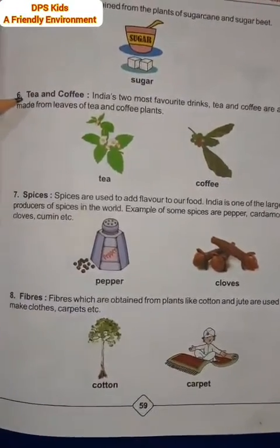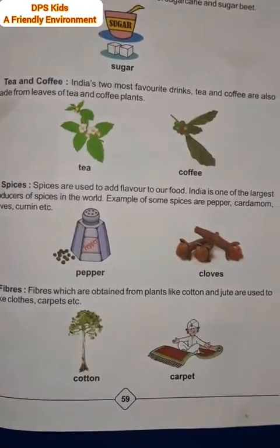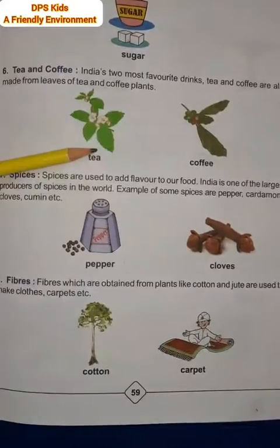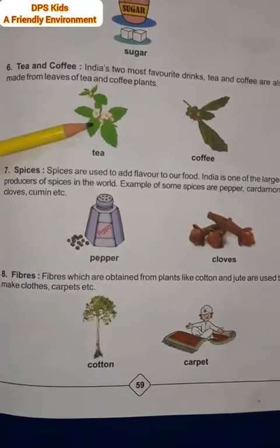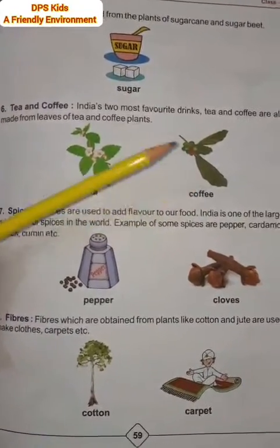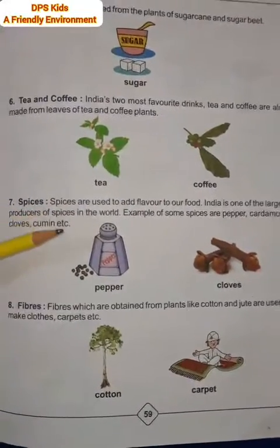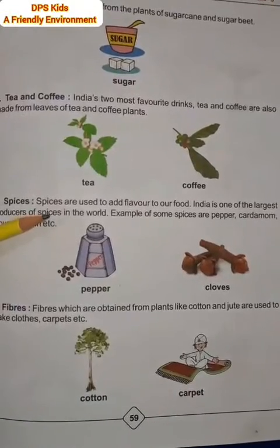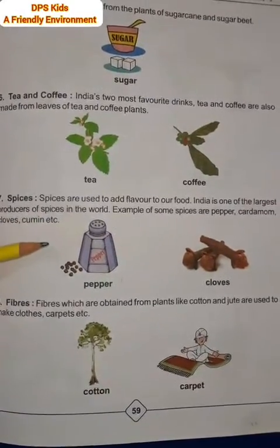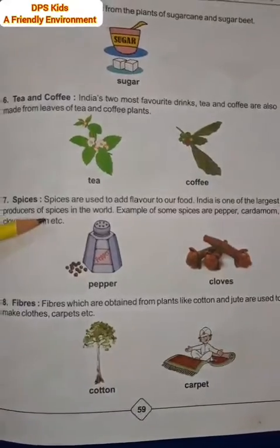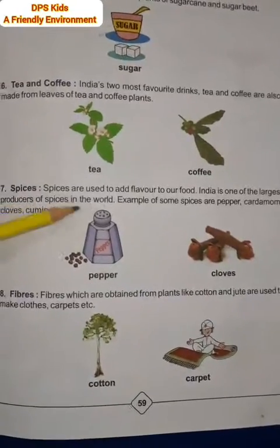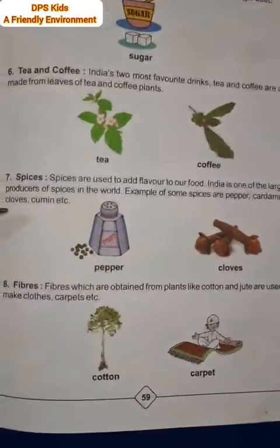Tea and coffee — India में जो सबसे ज़्यादा favorite drinks हैं वो हैं tea और coffee। यह भी हमें plants से मिलती हैं — चाय, tea plant की leaves से मिलती है और coffee, coffee plant के seeds से बनती है। Spices यानि मसाले — spices are used to add flavor to our food। India is one of the largest producers of spices in the world। Examples of some spices are pepper, cardamom, cloves, cumin, etc।